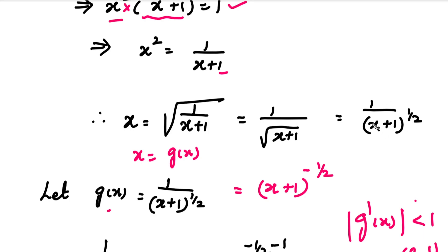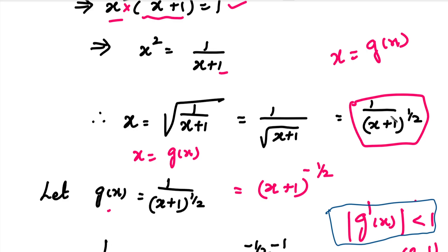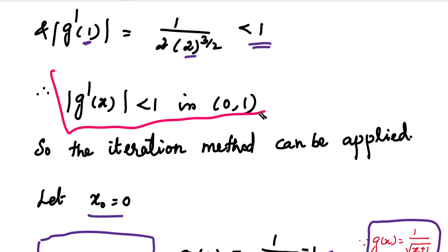This g(x) is a fraction. So we need to check the convergence condition. We need to verify that the modulus of g'(x) is less than 1 in the interval [0, 1]. That is why we use the polynomial form to proceed with finding g'(x).